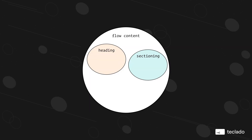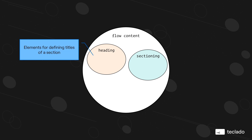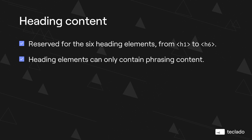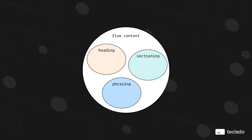As well as sectioning, inside flow content we've also got heading content. Heading content is used for defining titles of a section. The heading content category is reserved for the six heading elements from H1 to H6, with H1 being the most important title of the page and H6 being the least important. The heading elements can only contain phrasing content inside them, so let's take a look at phrasing content.